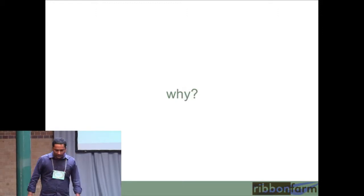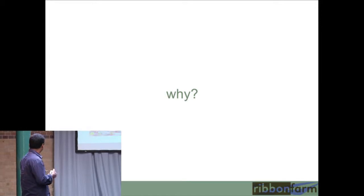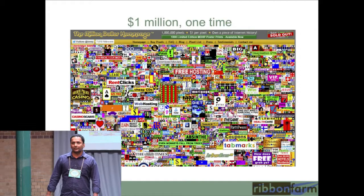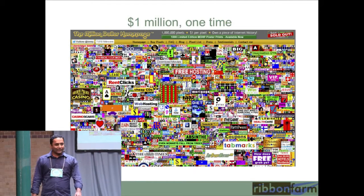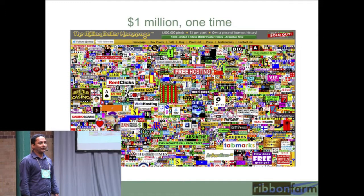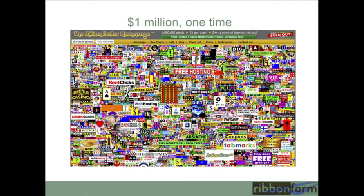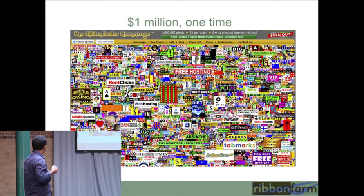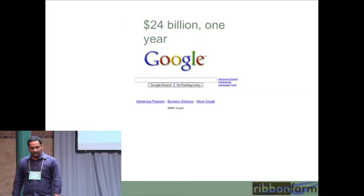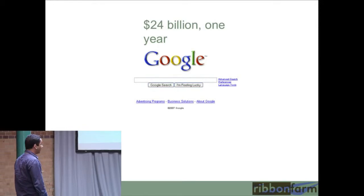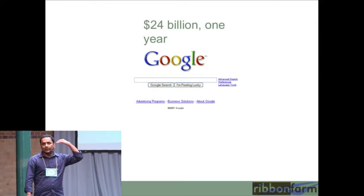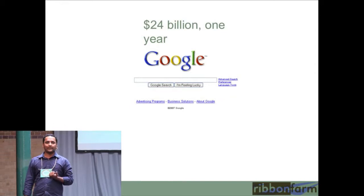So why should we waste pixels? Let me illustrate with an example. How many of you have seen this web page? This is the famous million-dollar web page — a thousand-by-thousand screen where the guy was selling a pixel for a dollar each. This is scarcity thinking around pixels, and it looks absurd — it's a confusion and chaos of colors. And it's absurd when you compare it to Google. That's not a million-dollar page — that's a $24 billion a year page, and most of the pixels are wasted. This is what I think of as an abundance mindset around pixels.